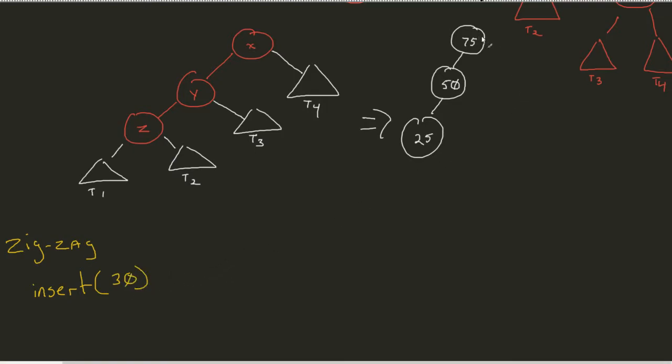In this case, we see that we have our structure. We still have 75 being the root node since it was just inserted. We have a 50, we have a 25. So normal binary search tree rules apply. 30 is less than 75, it's less than 50, but it's greater than 25. And so as a result, you'd notice that it's going to come here.